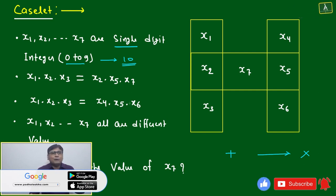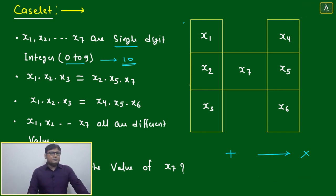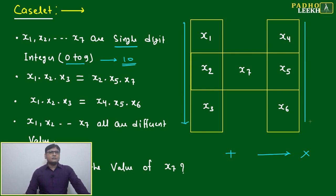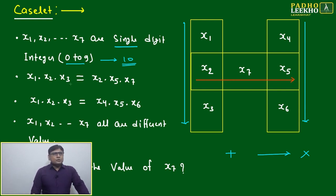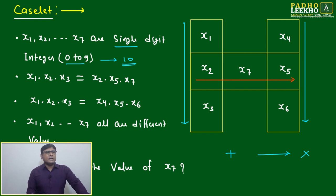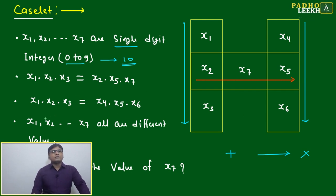Now, x1 into x2 into x3 — this vertical column product — equals x2 into x5 into x7, which is the horizontal line. Similarly, x1 into x2 into x3 equals x4 into x5 into x6. So all three products are the same — that is the core condition.